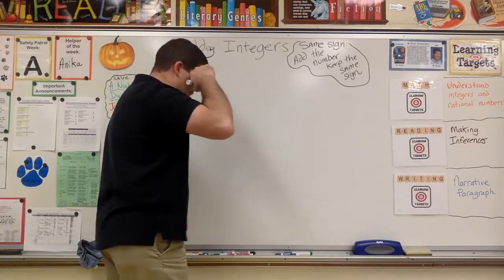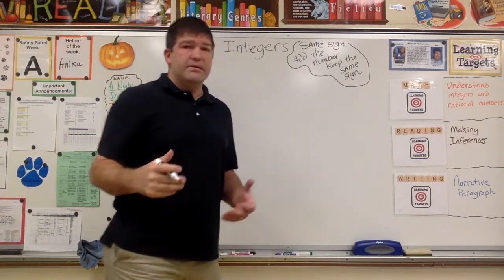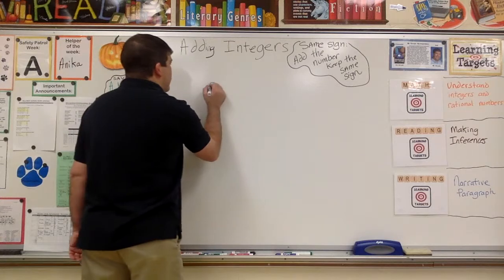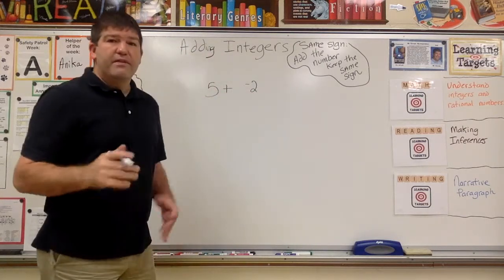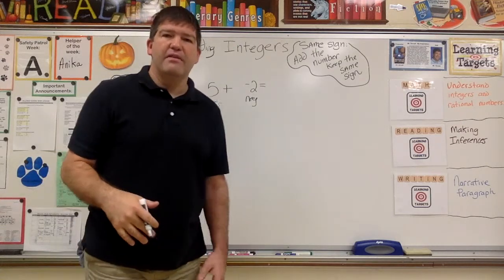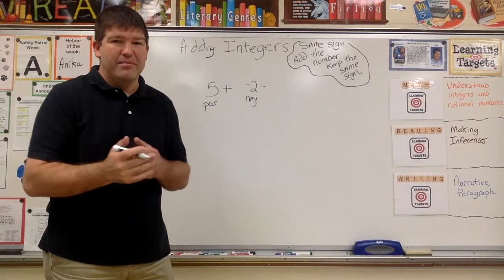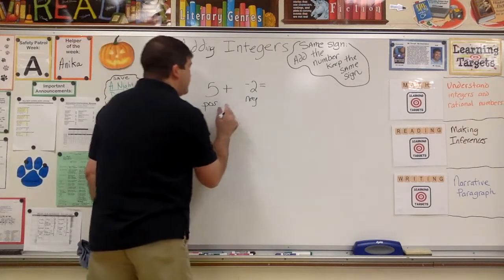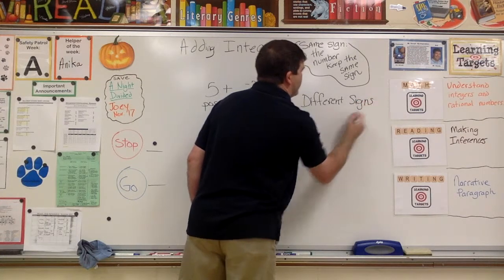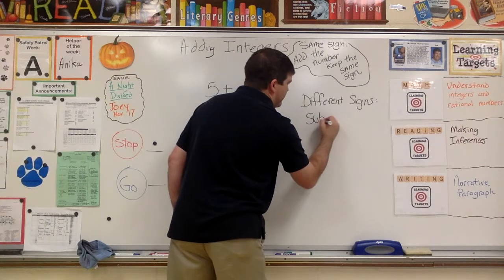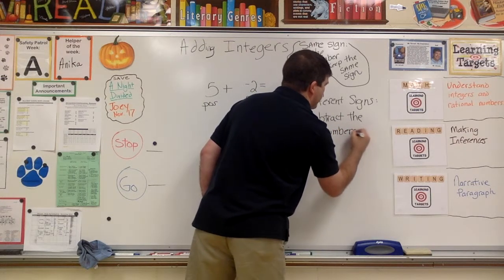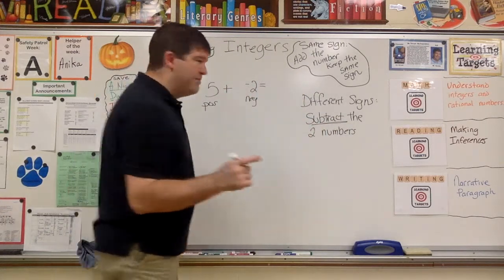For different signs, you take the two numbers, you subtract them, and keep the sign of the bigger number. So let's do five plus negative two. They have different signs — this is a negative here and this is a positive. You're going to subtract the two numbers; that's the tricky part when you have different signs.